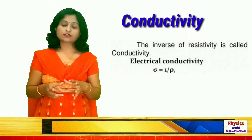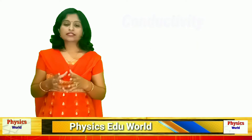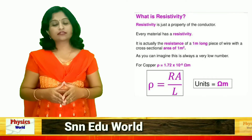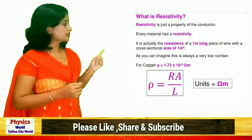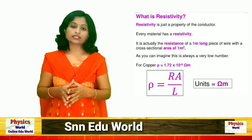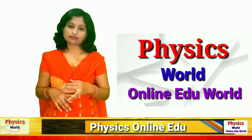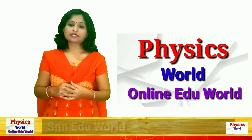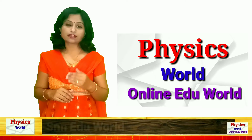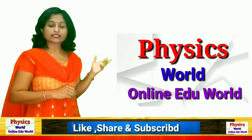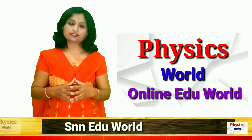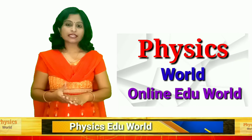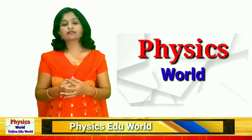So conductivity is always measured in ohm·meter raised to minus one. This is the total lecture about resistance, specific resistance, and conductivity. Each specific material has a particular value of specific resistance. For example, copper has a given value. You can make a list of various conducting materials and their resistivity values. I hope you understand the concept of specific resistance and specific conductance. If you did, please like, comment, share, and subscribe to our channel. Thank you.